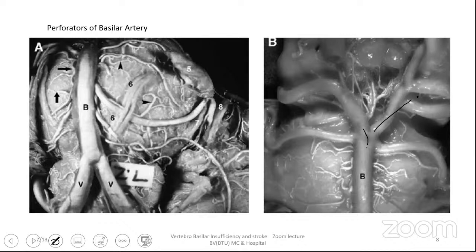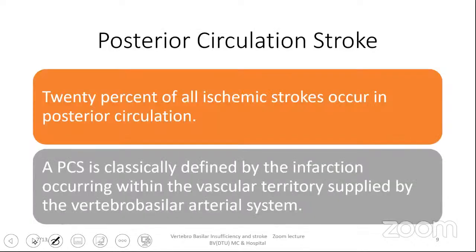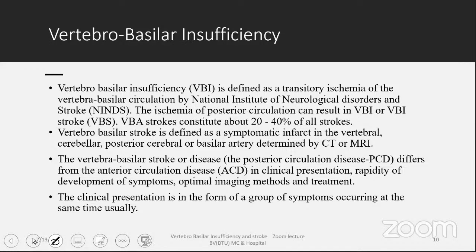There will always be symmetry, and there are many anomalies in the posterior circulation — about 11 to 12 of them — which we will review for clinical significance. Twenty percent of all ischemic strokes occur in the posterior circulation. A posterior circulation stroke is defined as infarction occurring within the vascular territory supplied by the vertebrobasilar arterial system. Vertebrobasilar insufficiency (VBI) has emerged as another important concept.